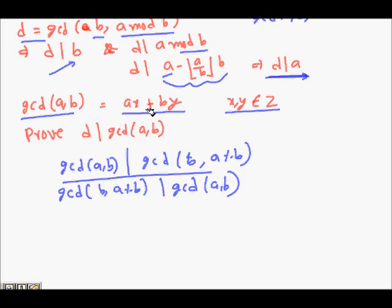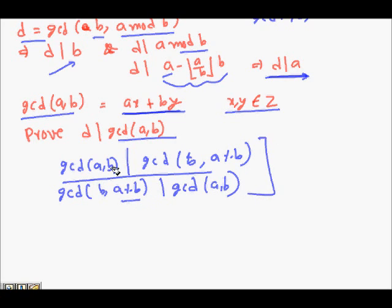So GCD(B, A modulo B) divides both A and B. Since GCD(A, B) can be written as AX + BY for integers X, Y, D divides this linear combination and therefore divides GCD(A, B). We have now proved both directions: GCD(A, B) divides GCD(B, A modulo B) and vice versa, so GCD(A, B) equals GCD(B, A modulo B).